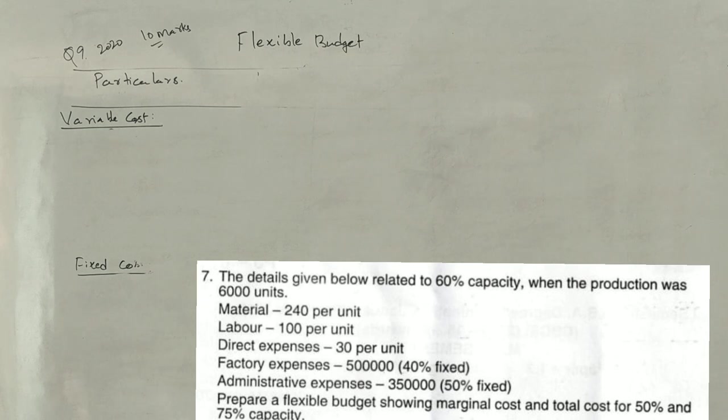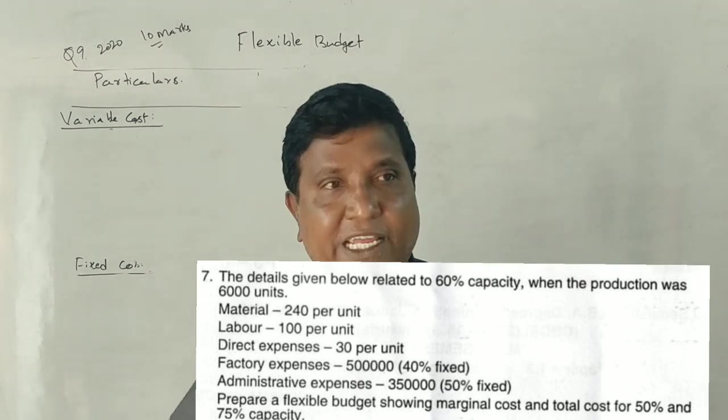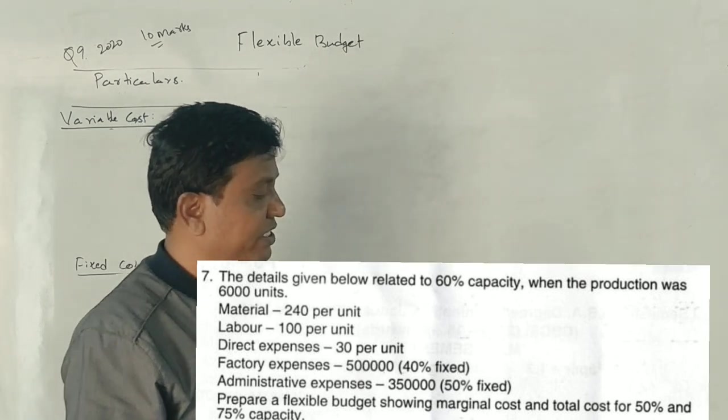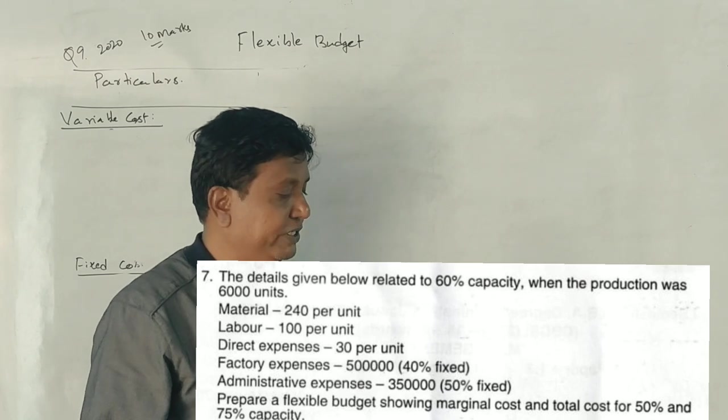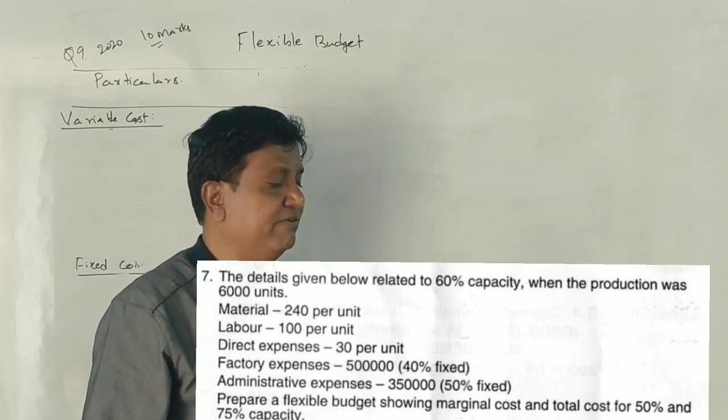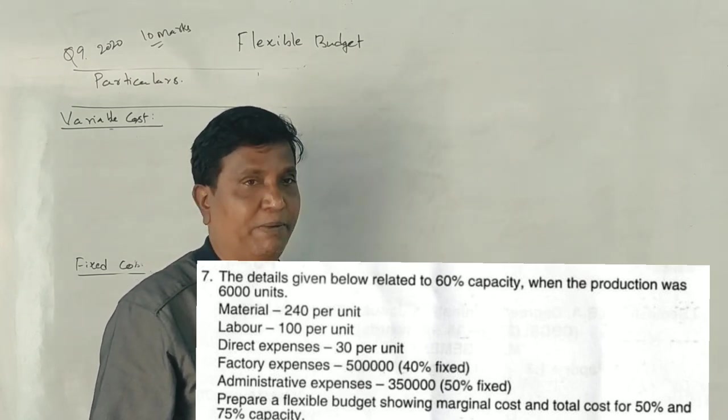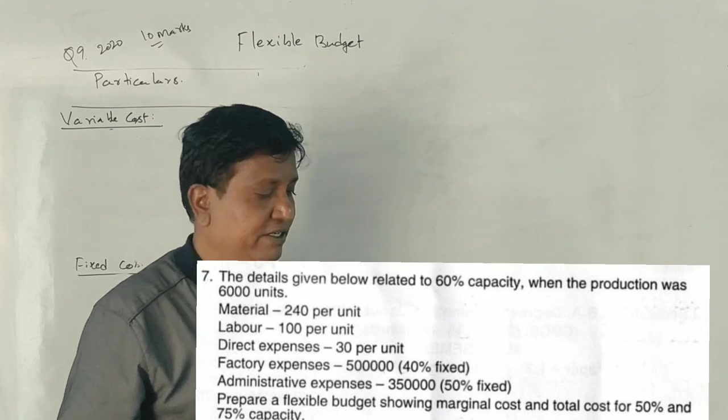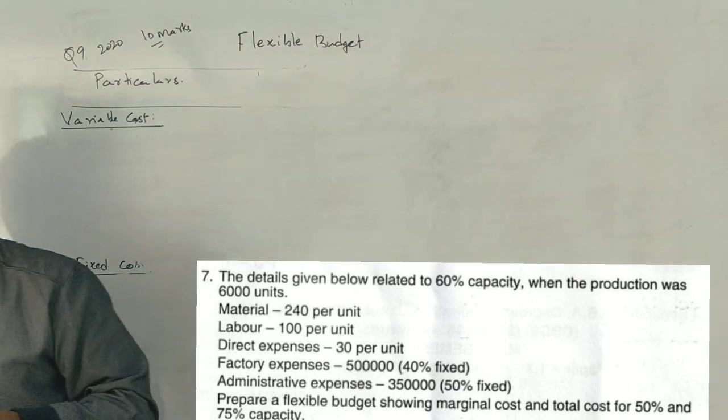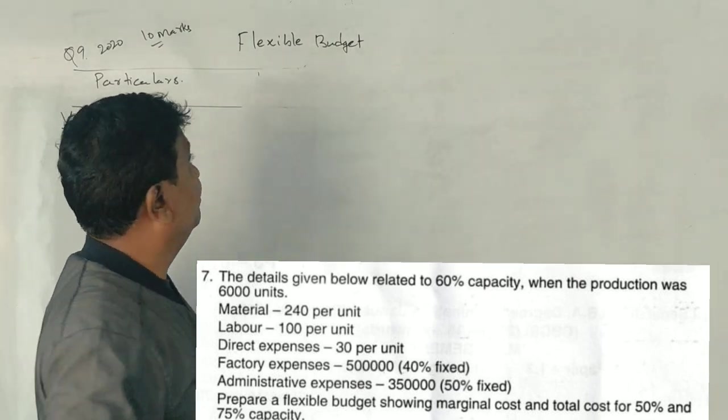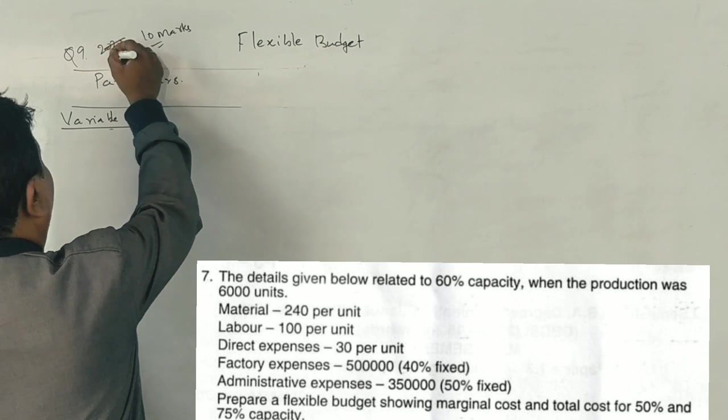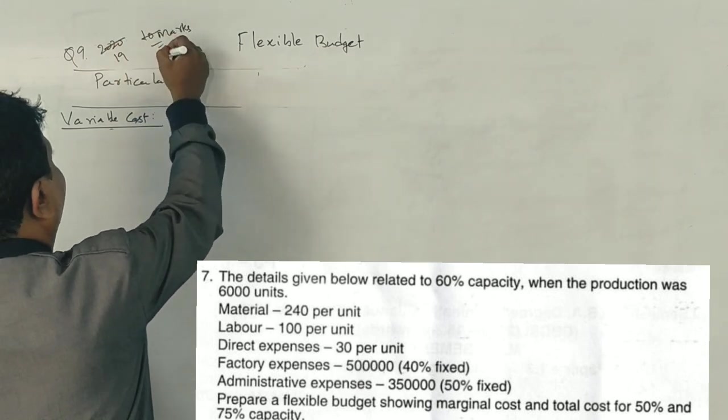Okay, 2019 question paper MBA PCO question paper, question number one. Put in the read the details given below related to 60 percent capacity. This is a five marks question from the flexible budget 2019.